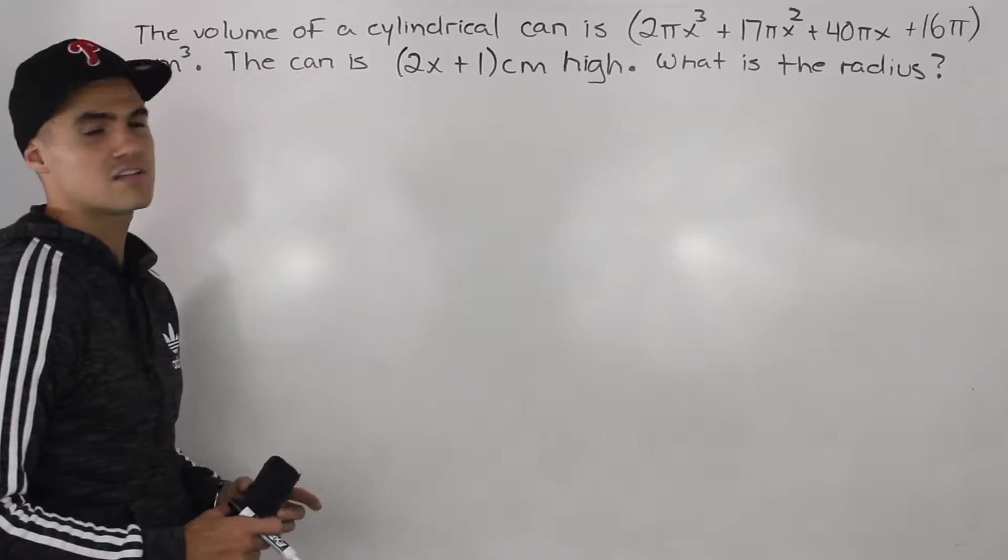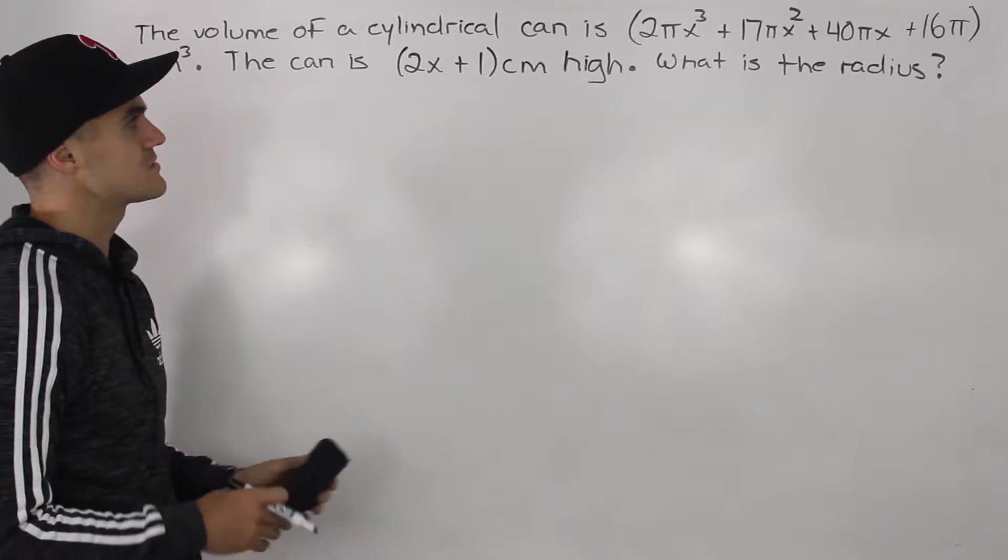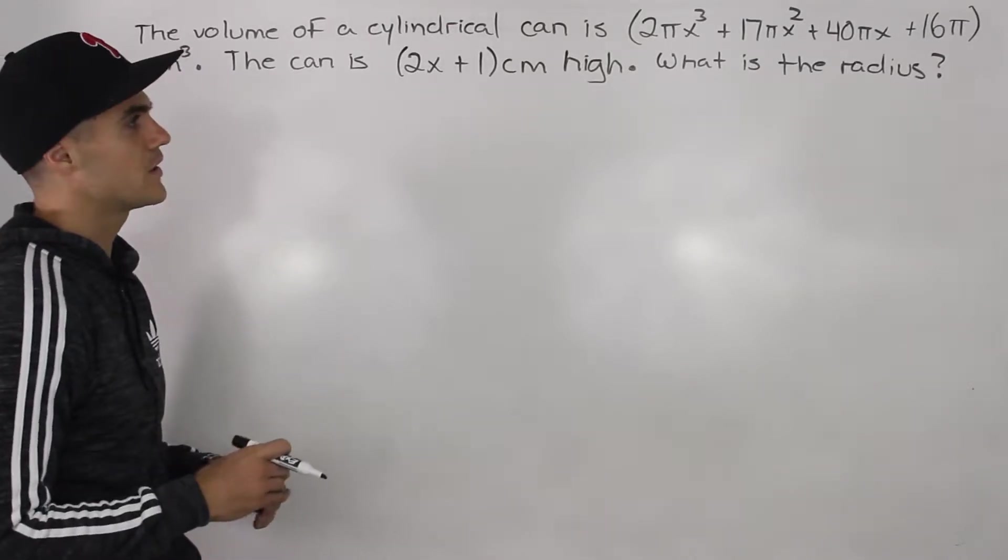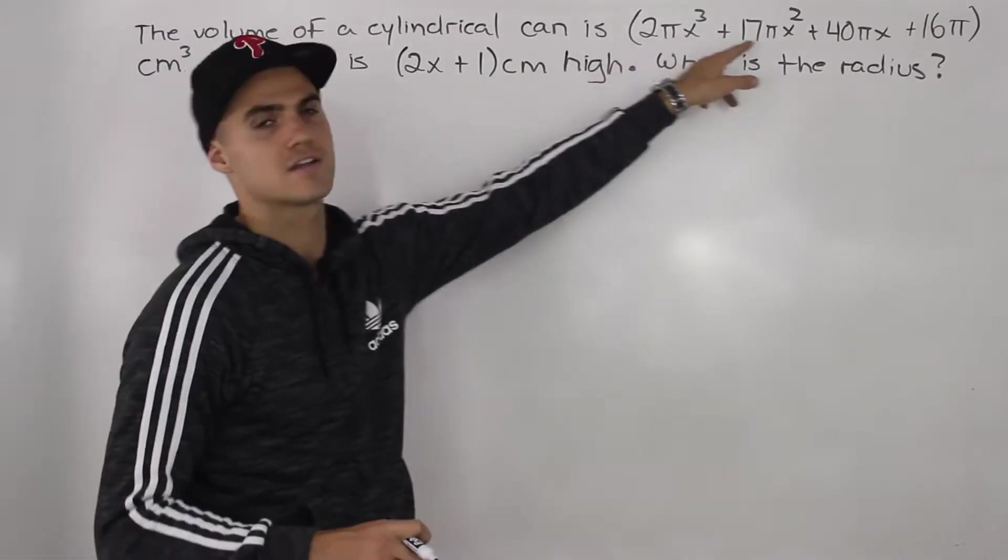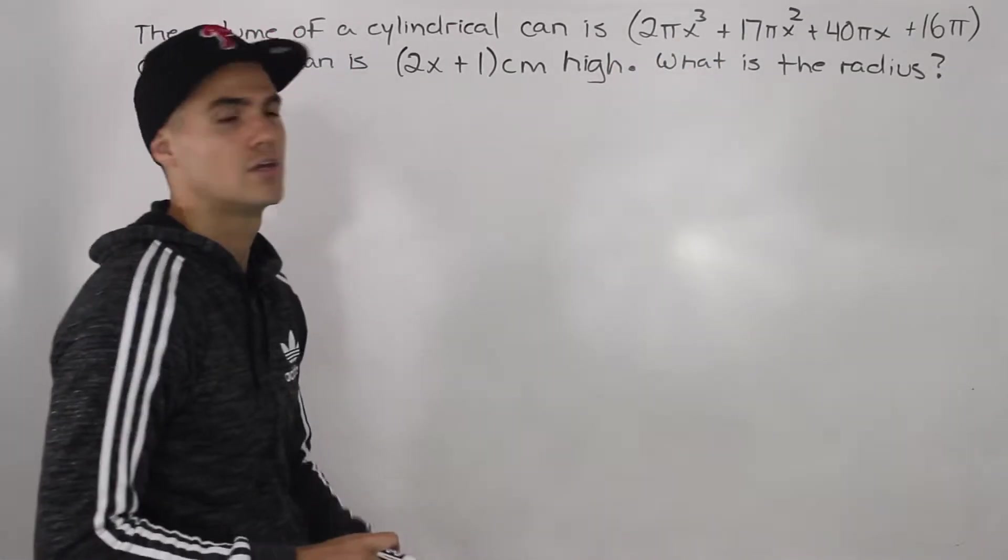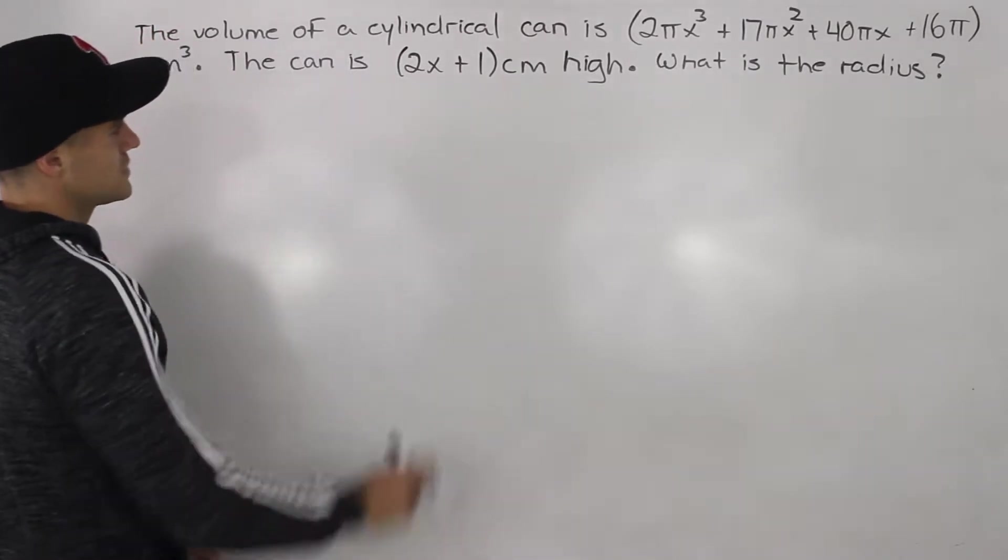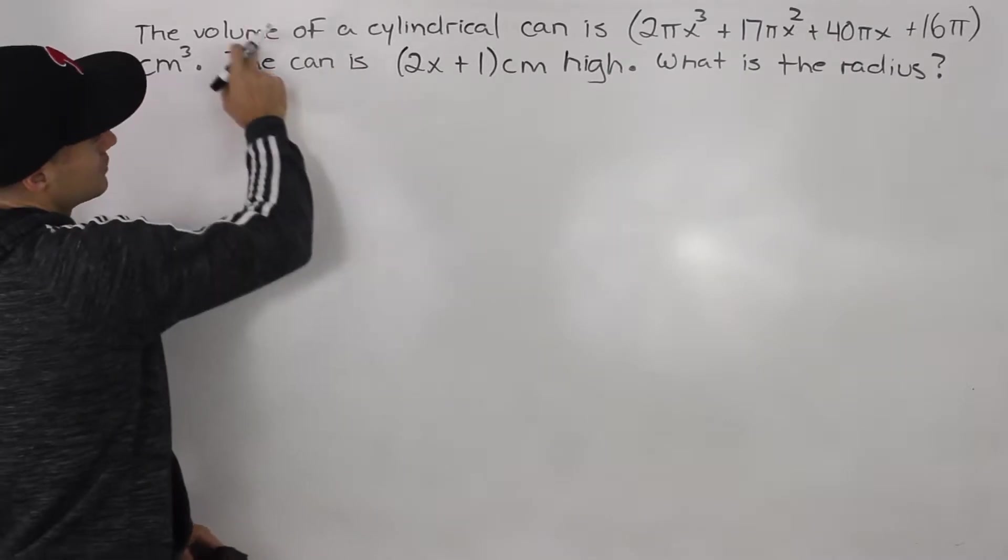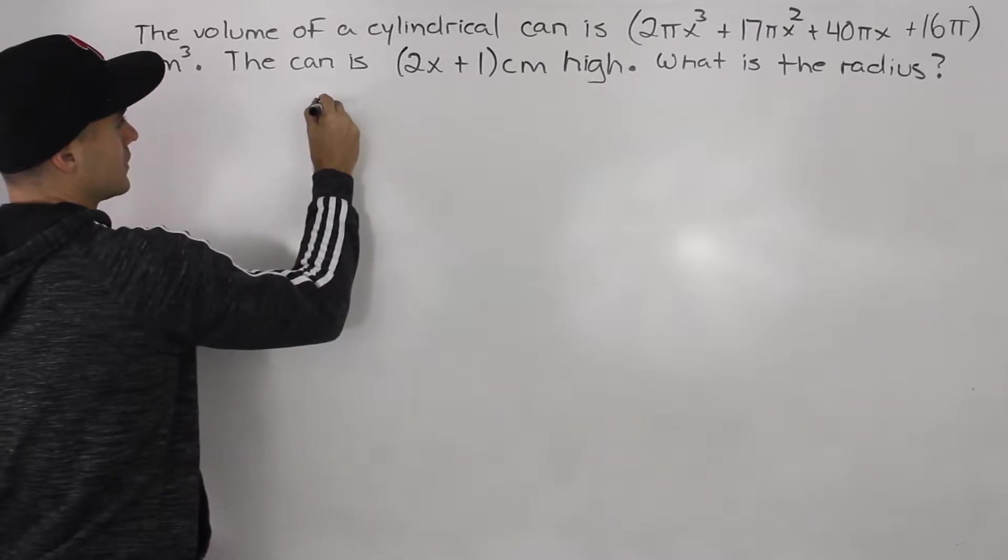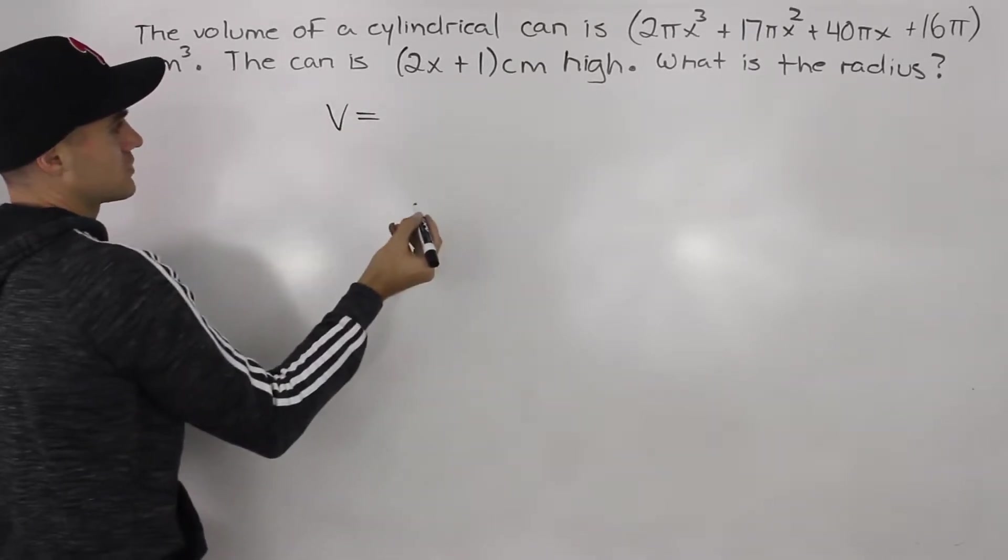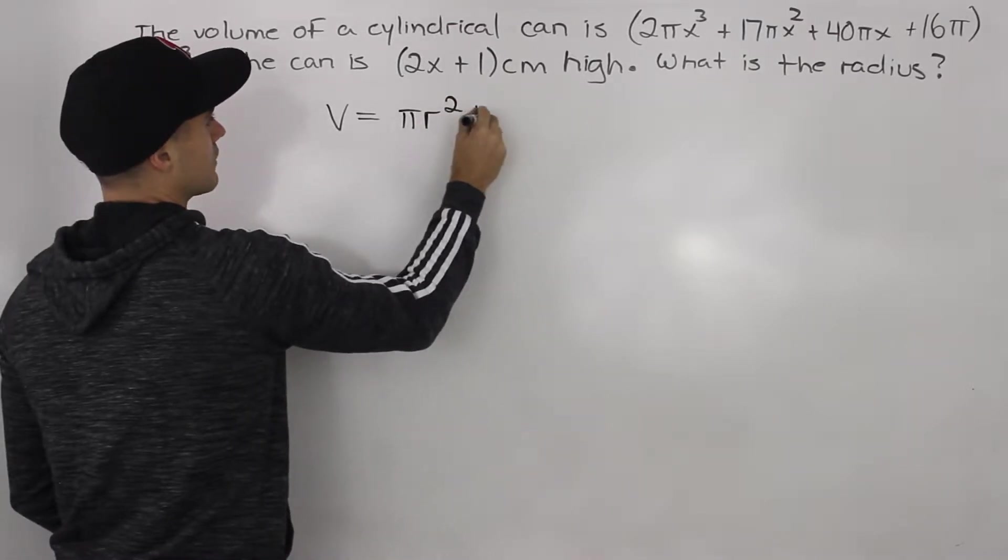Now this question is fairly tough. It's not going to be too difficult algebraically, but just manipulating equations is different. It's unique dealing with these π's here in this polynomial. Usually we don't see that. So we're dealing with a cylindrical can. Notice we're given the volume, we're given the height. What is the general formula for the volume of a cylindrical can? We know it's V = πr²h.